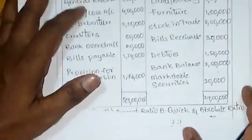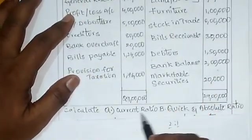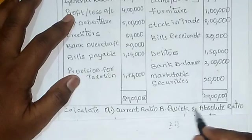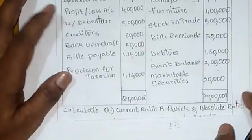This is the problem given to us. We need to calculate: current ratio, quick ratio, and absolute quick ratio.